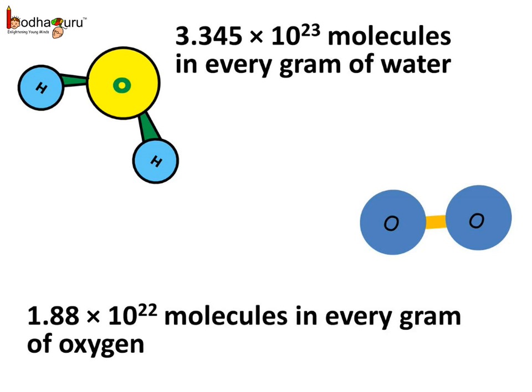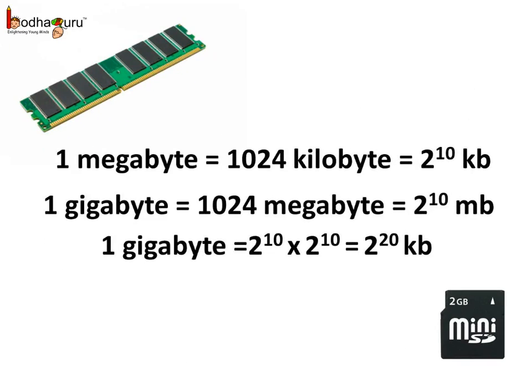Also, in 1 gram of oxygen, there are 1.88 multiplied by 10 to the power 22 molecules. We use the exponents even in our daily life. For example, when we think about a memory chip or RAM in the PC, we know 1 megabyte is equal to 1024 kilobytes, that is, 2 to the power of 10 KB.